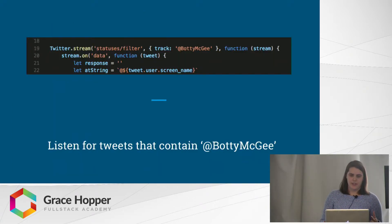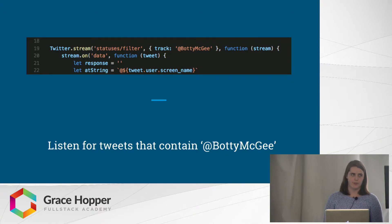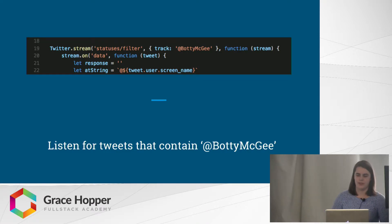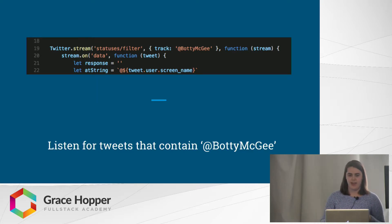The first thing we do is listen to the Twitter stream of statuses — the tweets on the platform. When something matches the parameters we're tracking, which in this case is the string '@BodyMcGee', we capture that tweet object and throw it into our callback function. Ultimately, at the end of all this code, we are going to have a response string and the @ string of the initial user that tweeted at Body McGee, so we can then push that out.